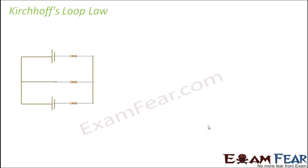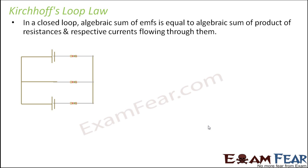Now let us move on to Kirchhoff's Loop Law, which states that in a closed loop the algebraic sum of EMFs is equal to the algebraic sum of the product of resistances and their respective currents. In any closed circuit, the total sum of the EMFs — since a circuit may have two or more cells — equals the product of the resistances and the respective currents flowing through them.